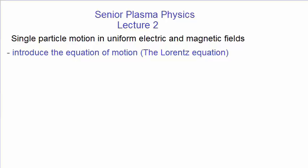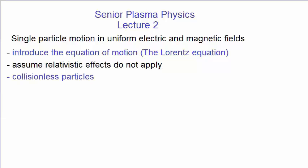In all of this, we will assume that there are no relativistic effects. They can easily be included — we do this for simplicity, and it covers most of the plasmas that we will meet. We're also assuming that the particles are collisionless. We will certainly treat collisional particles later. Because we're assuming that the particles are collisionless, that means we're also assuming that they are of very low density. As we'll see, there are low density properties of plasmas that do translate into plasmas of higher density.